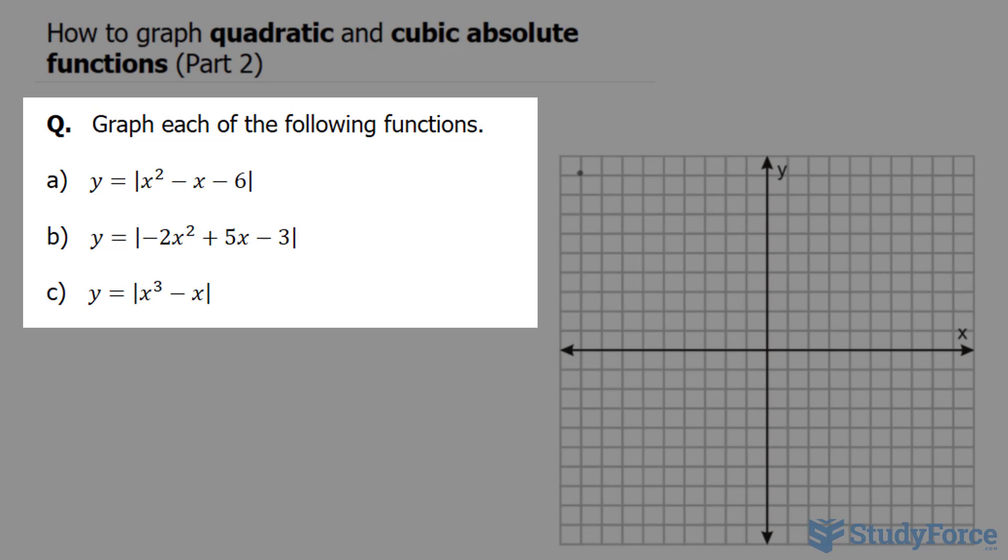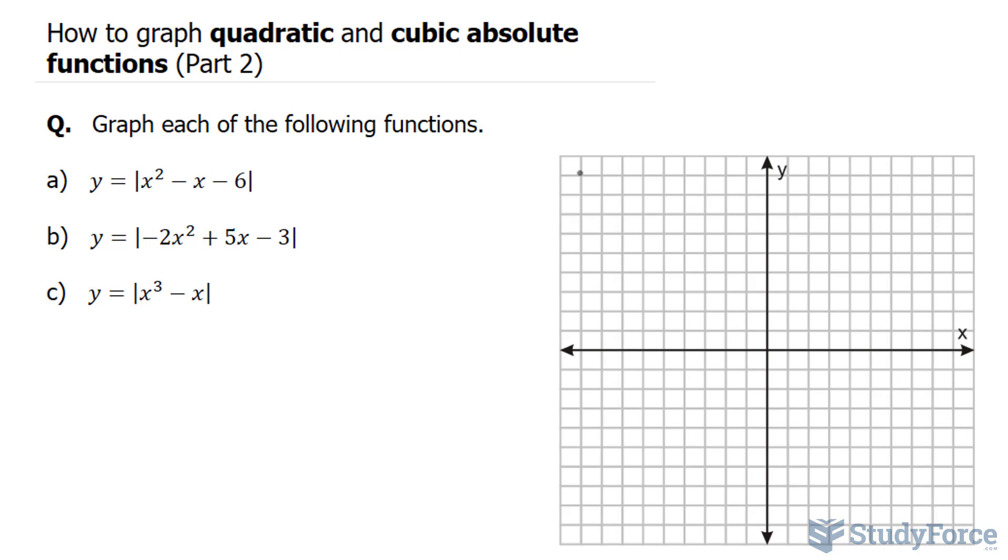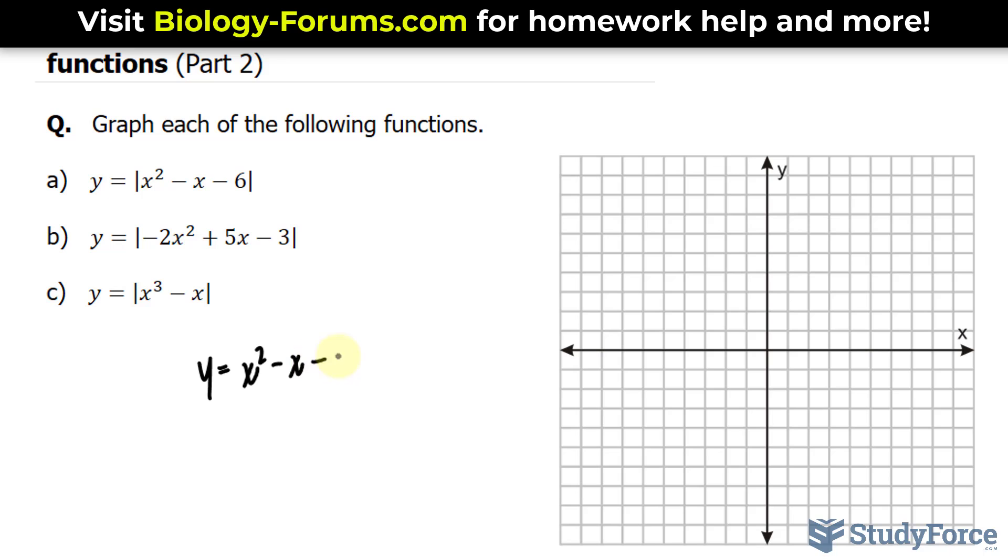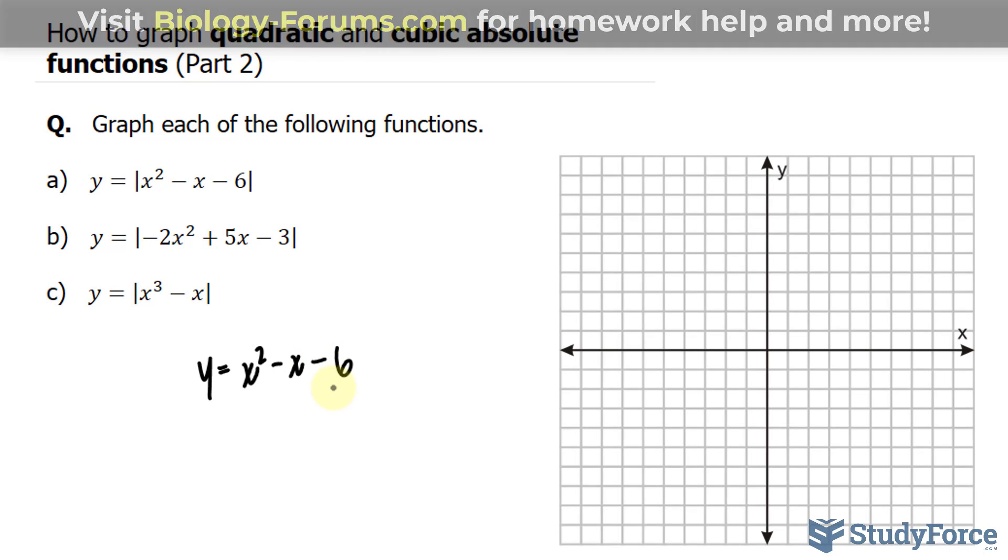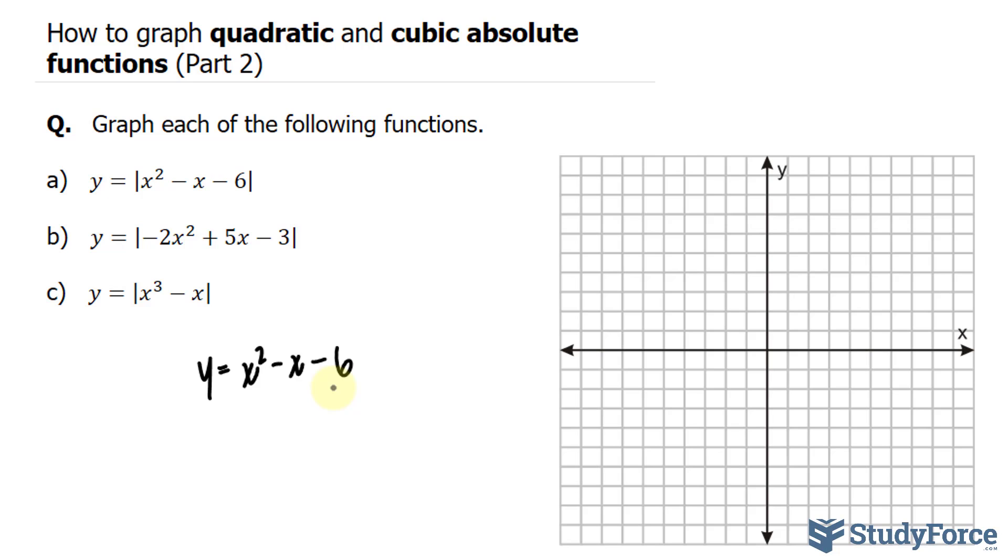We have y is equal to the absolute of the expression shown on your screen. The first thing that I'll do is graph this as if this part were positive. So I have y equals x squared minus x minus 6. I like to graph by factoring, so I'll factor this by trial and error. What two numbers multiply to negative 6 and add to negative 1? Negative 3 and positive 2. So I can rewrite this as y equals x minus 3 and x plus 2.